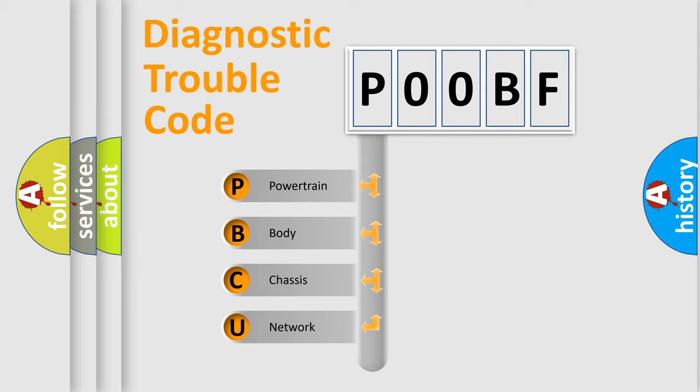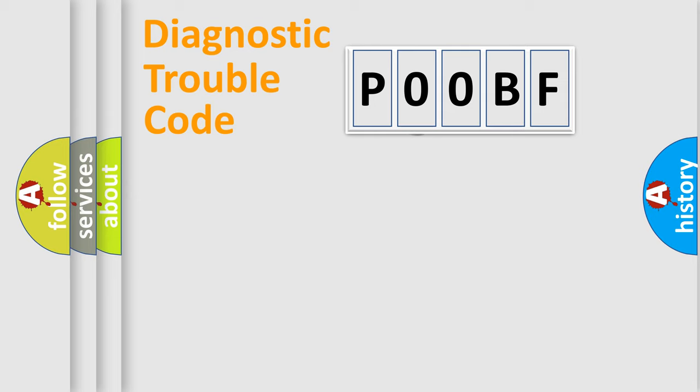We divide the electric system of automobile into four basic units: Powertrain, Body, Chassis, and Network. This distribution is defined in the first character code.